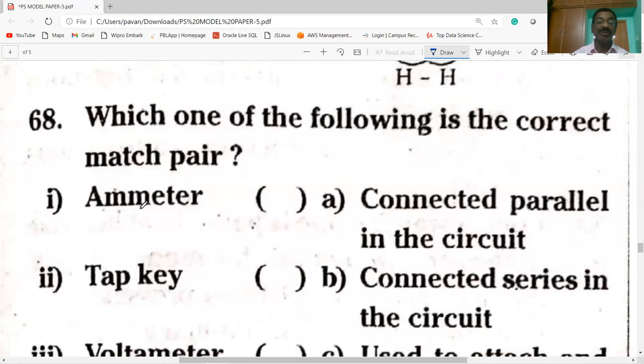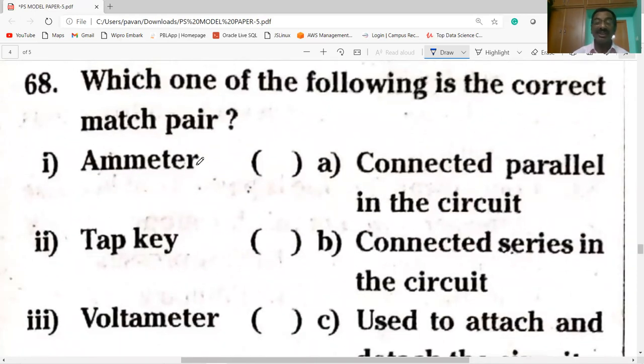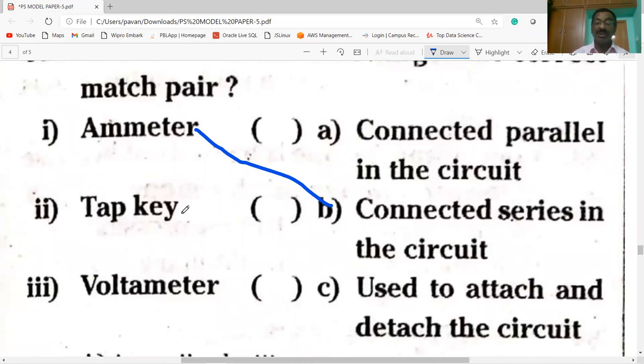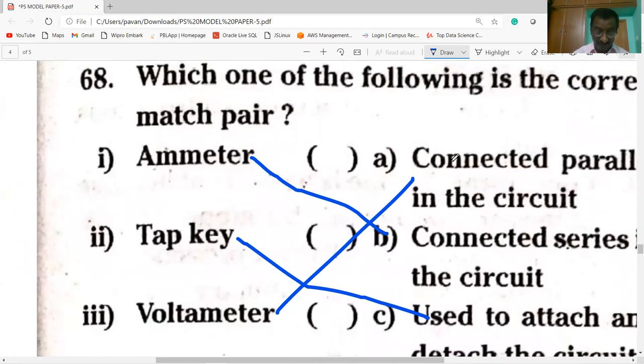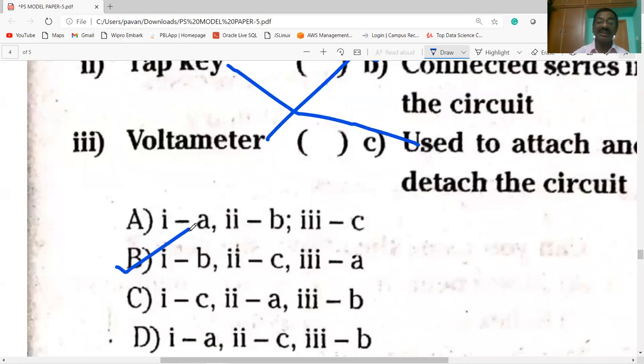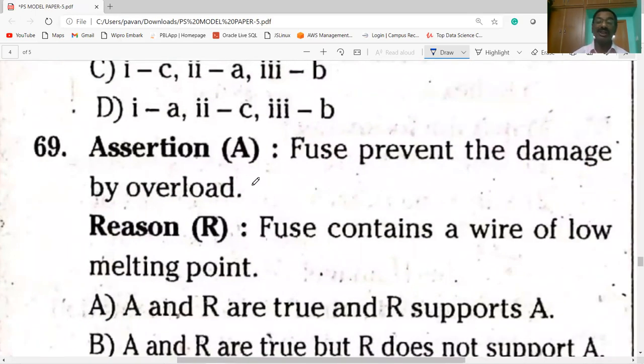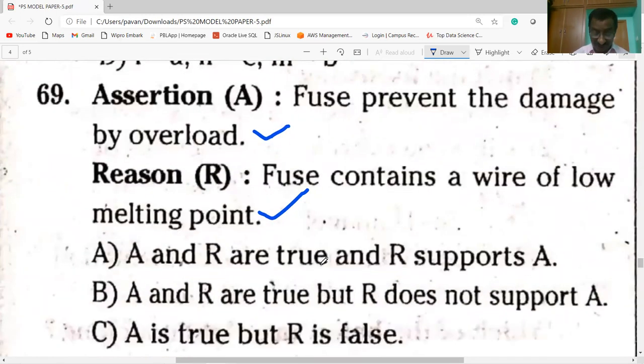Which one of the following is the correct pair? Ammeter is connected in series in the circuit. Tap key is used to attach and detach the circuit. A is correct.